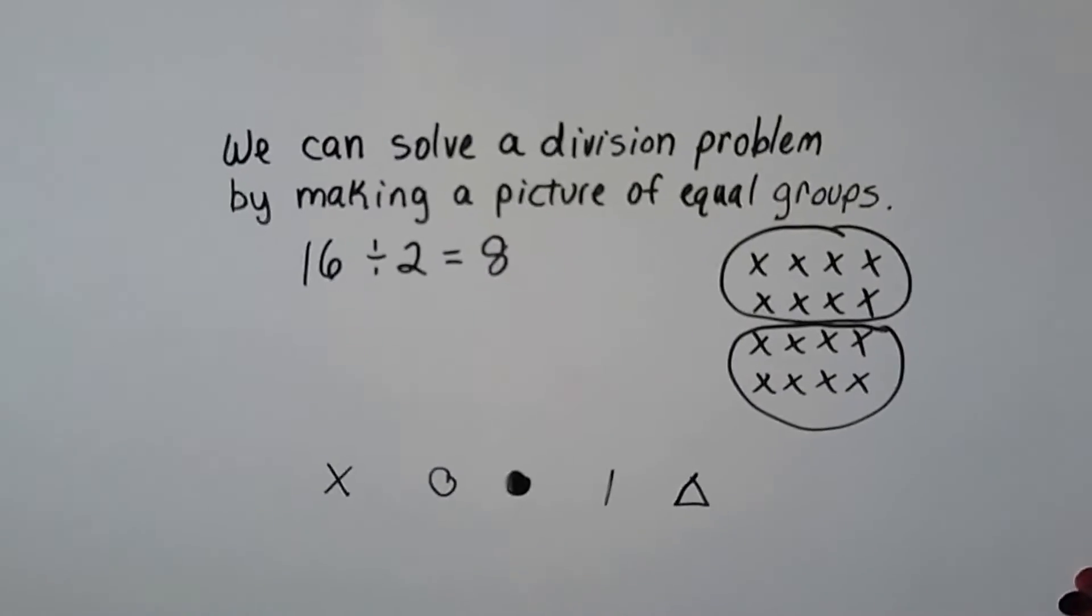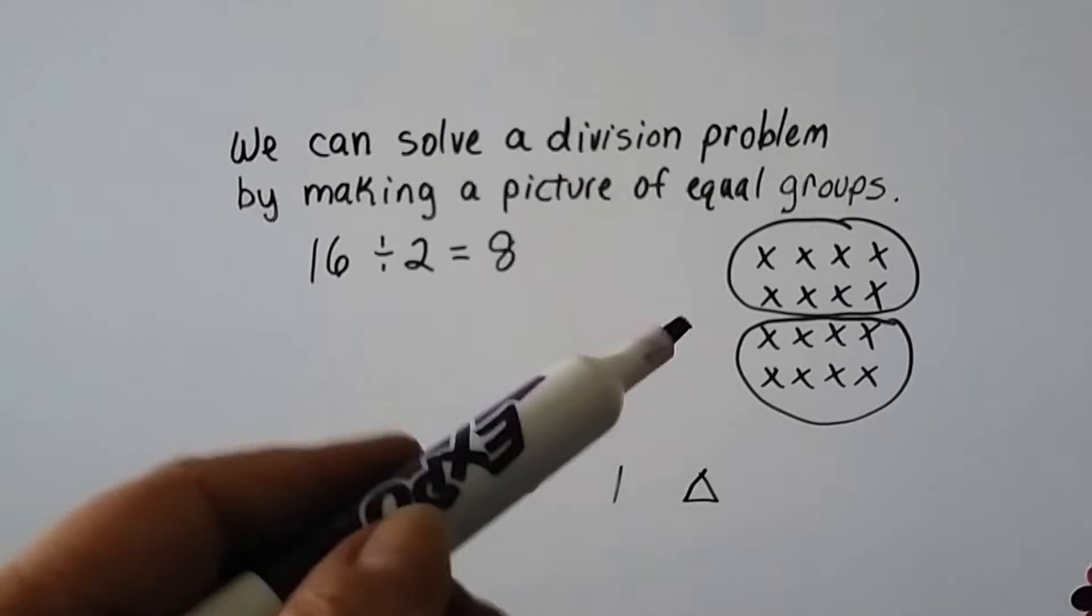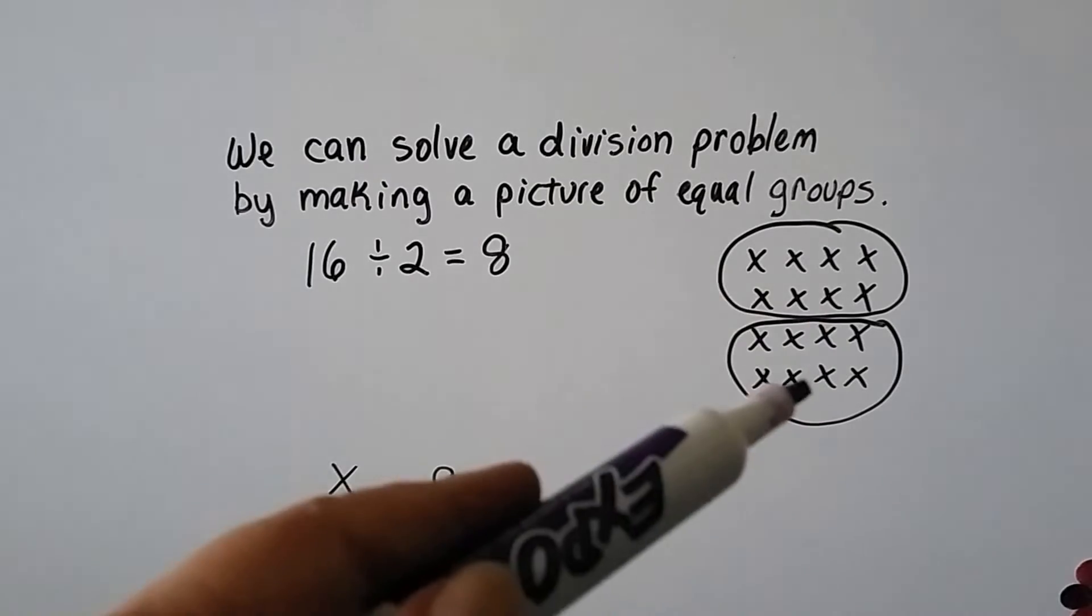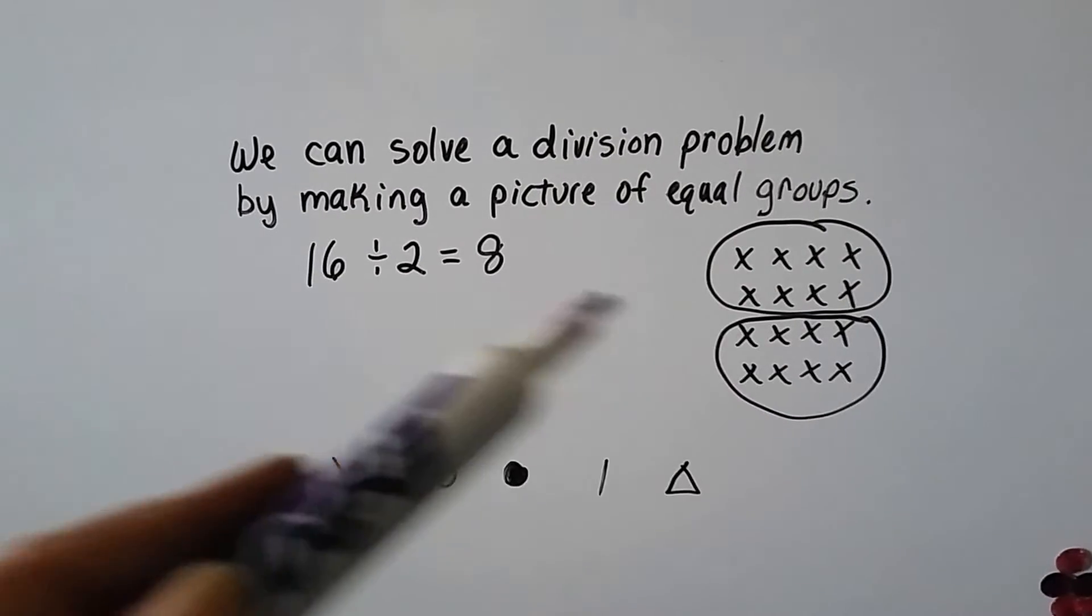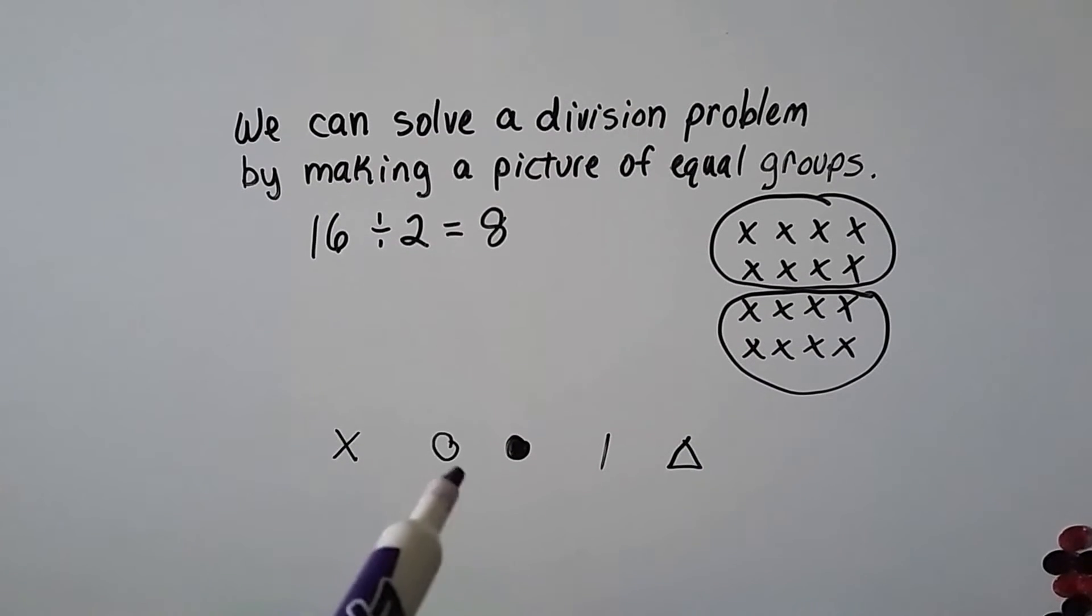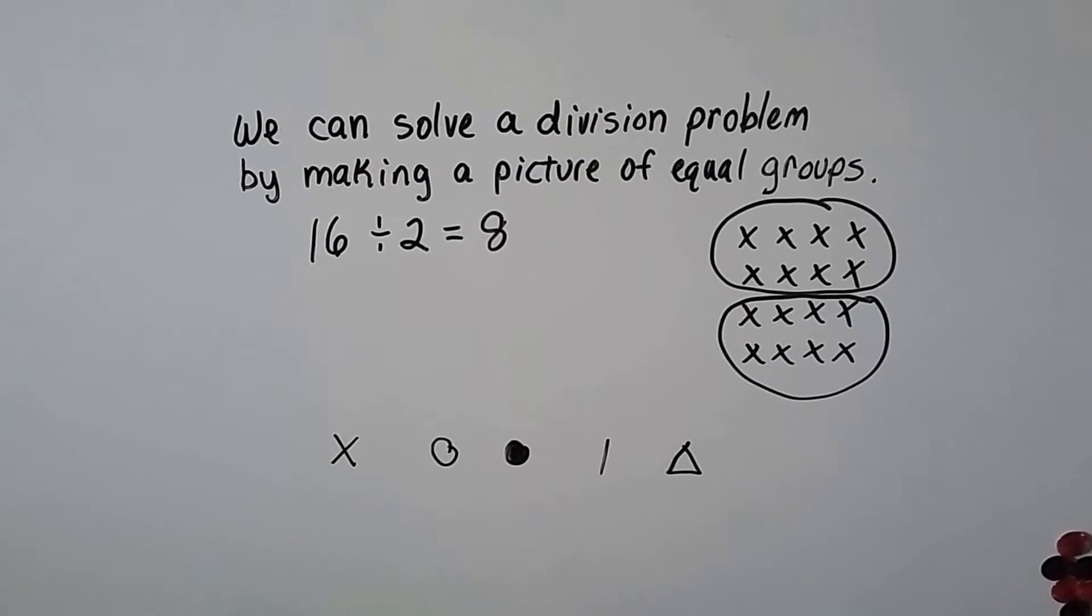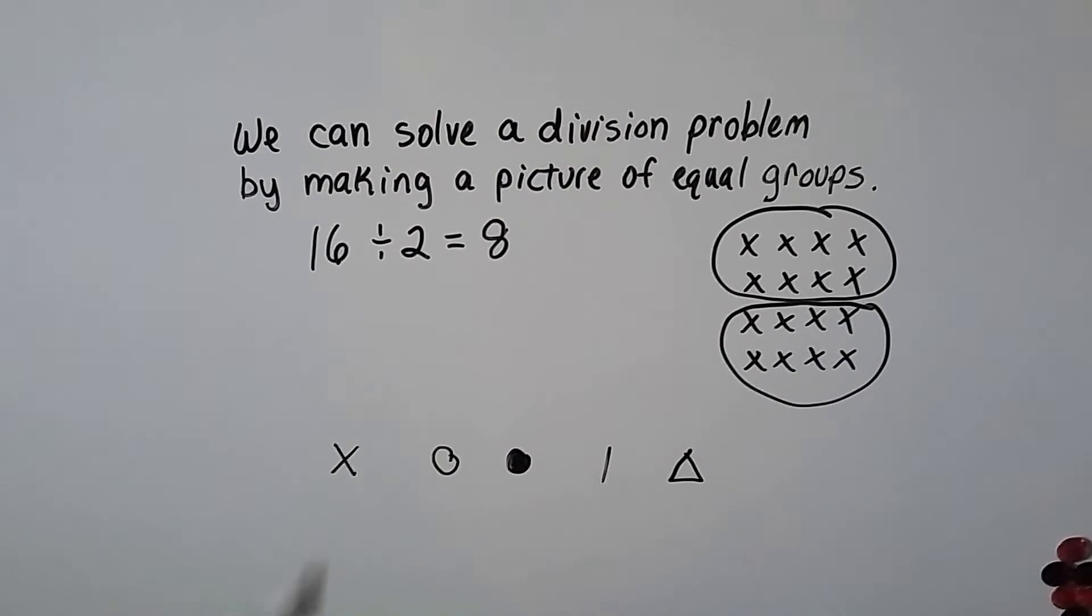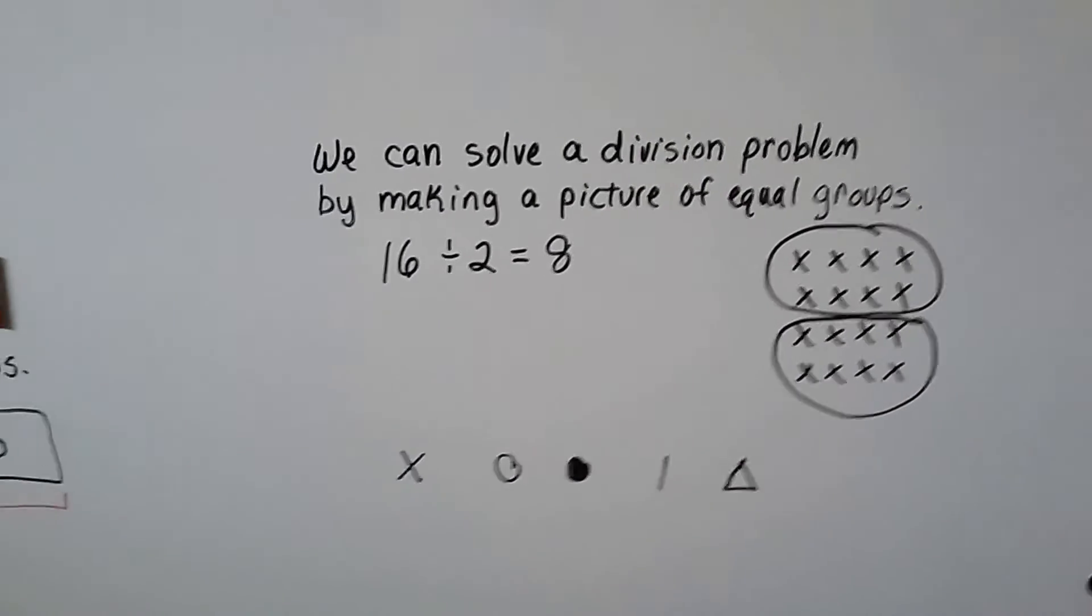We can solve a division problem by making a picture of equal groups. If we had 16 divided by 2 and we needed to know the answer, we could make 16 x's and then put them into two equal groups. We'd see that there's 8 in each group. You could use x's, a little circle, a little dot, a tally mark, triangles, or even hearts. You could make 16 little hearts and then draw them into two groups.